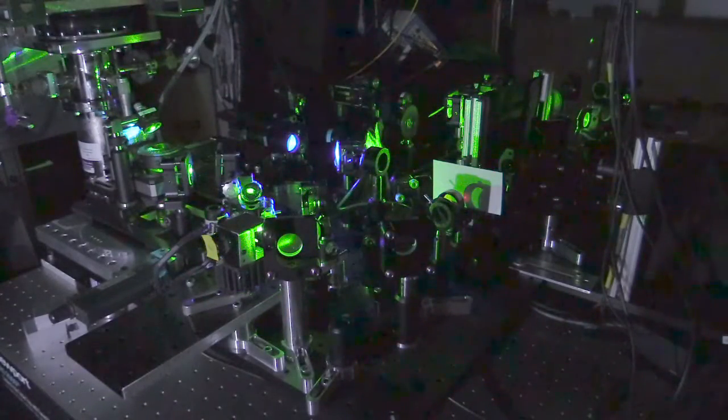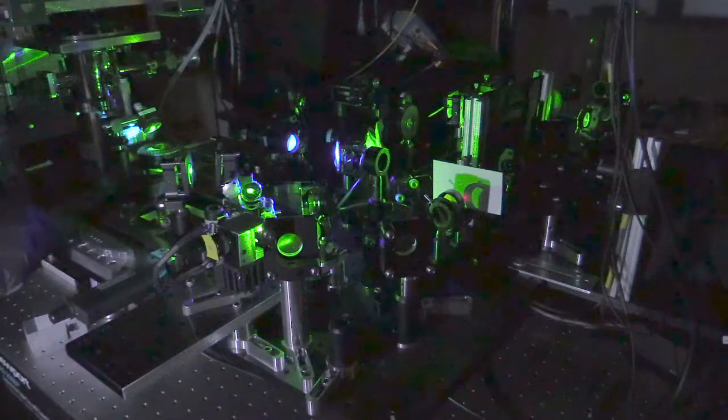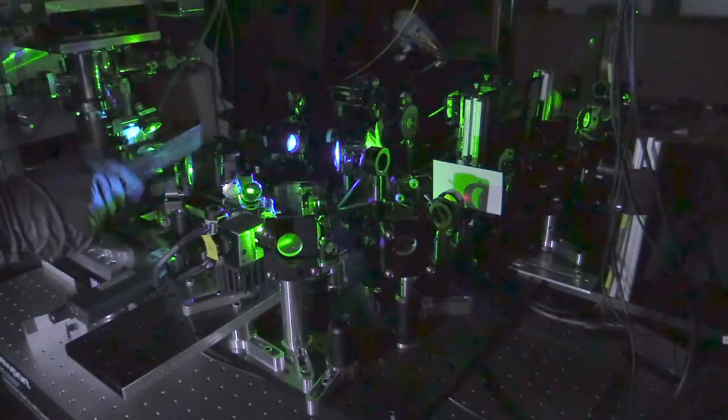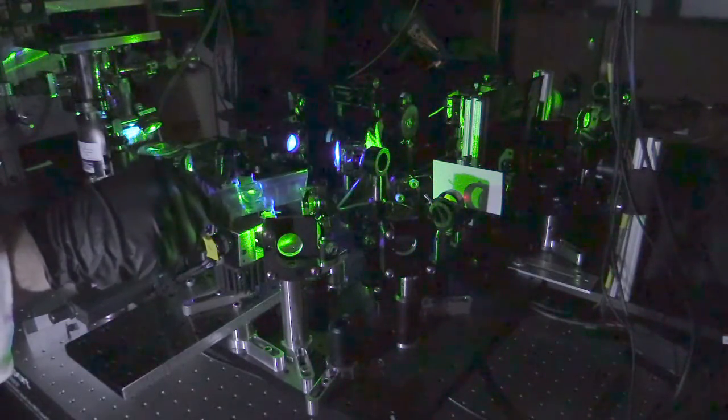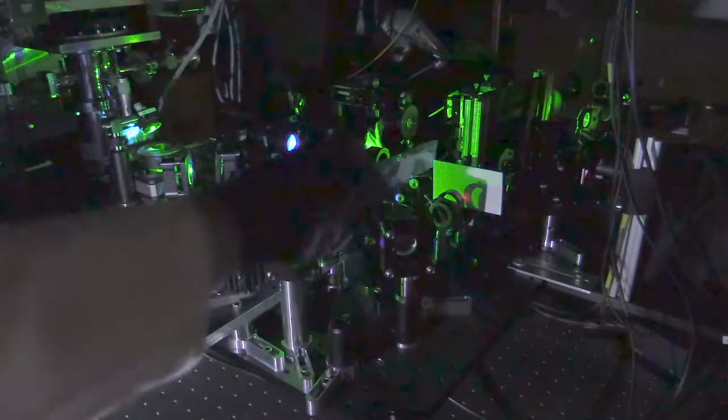The red light that comes off of our samples is collected by this objective here, bounces off of these mirrors, travels through this optical element, and onto our collection path.